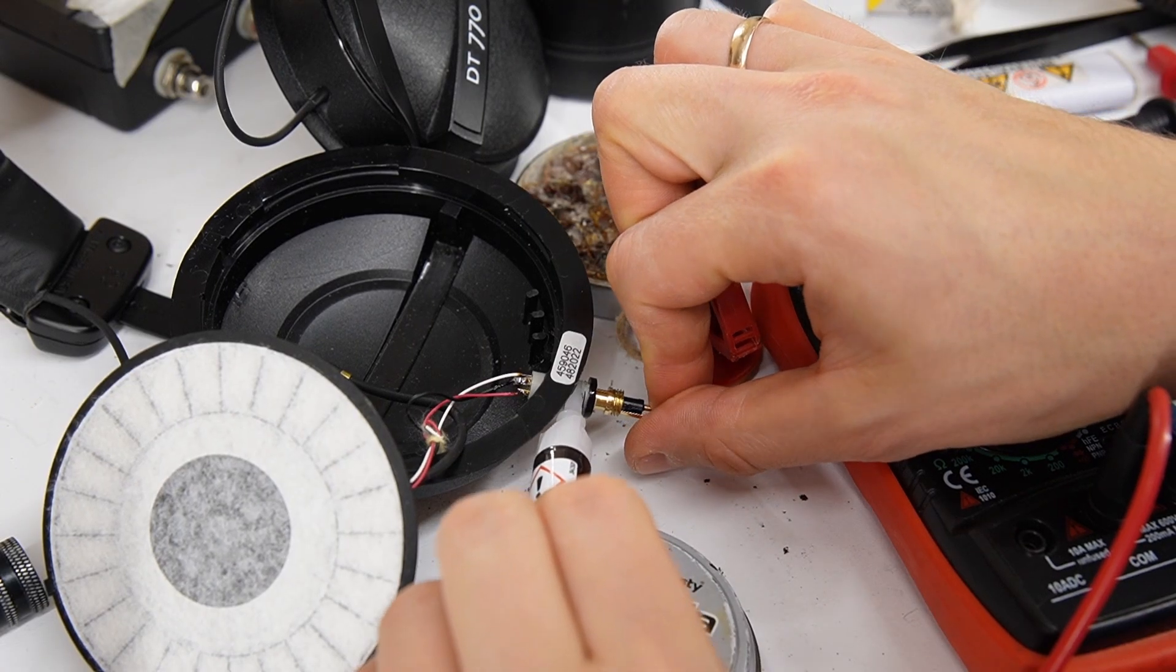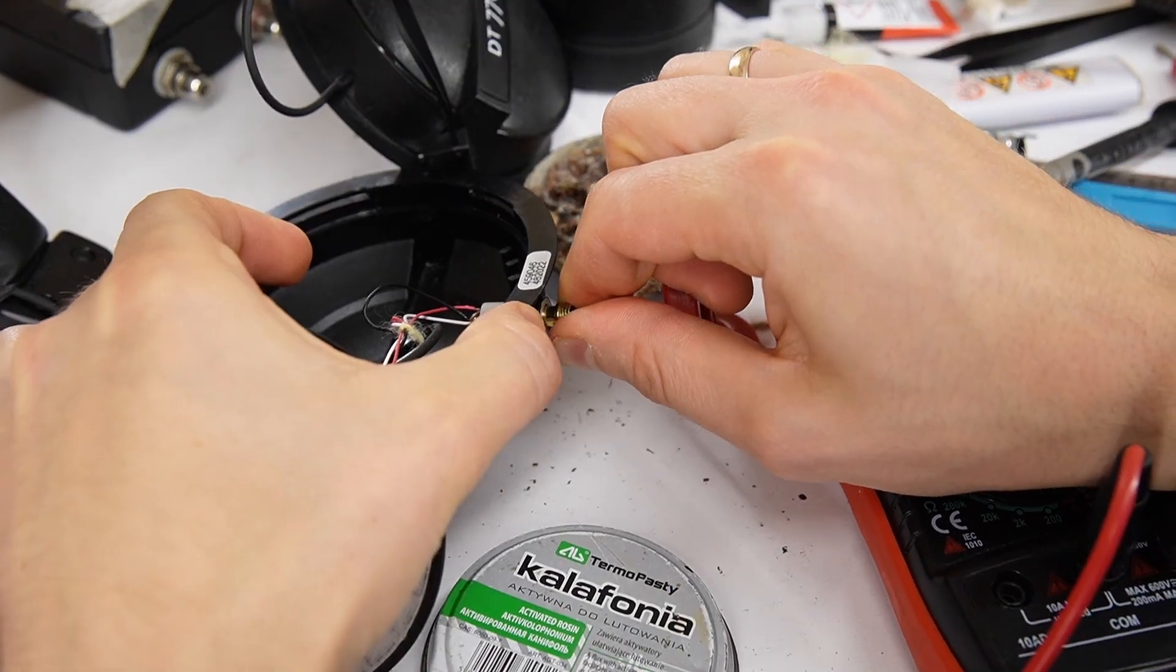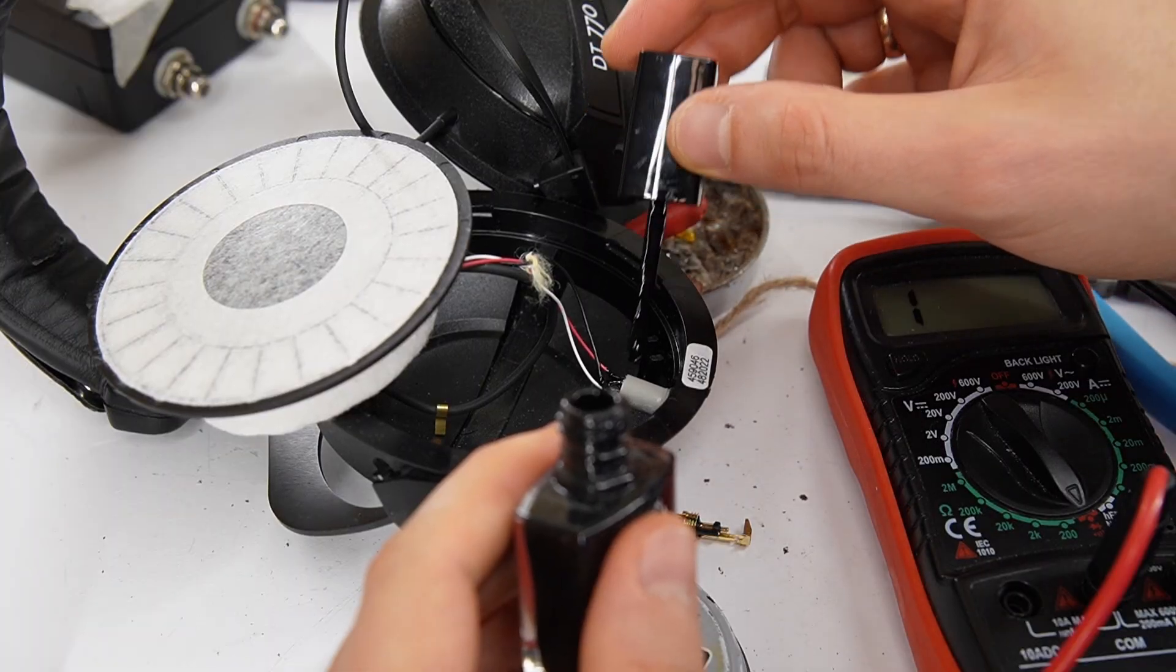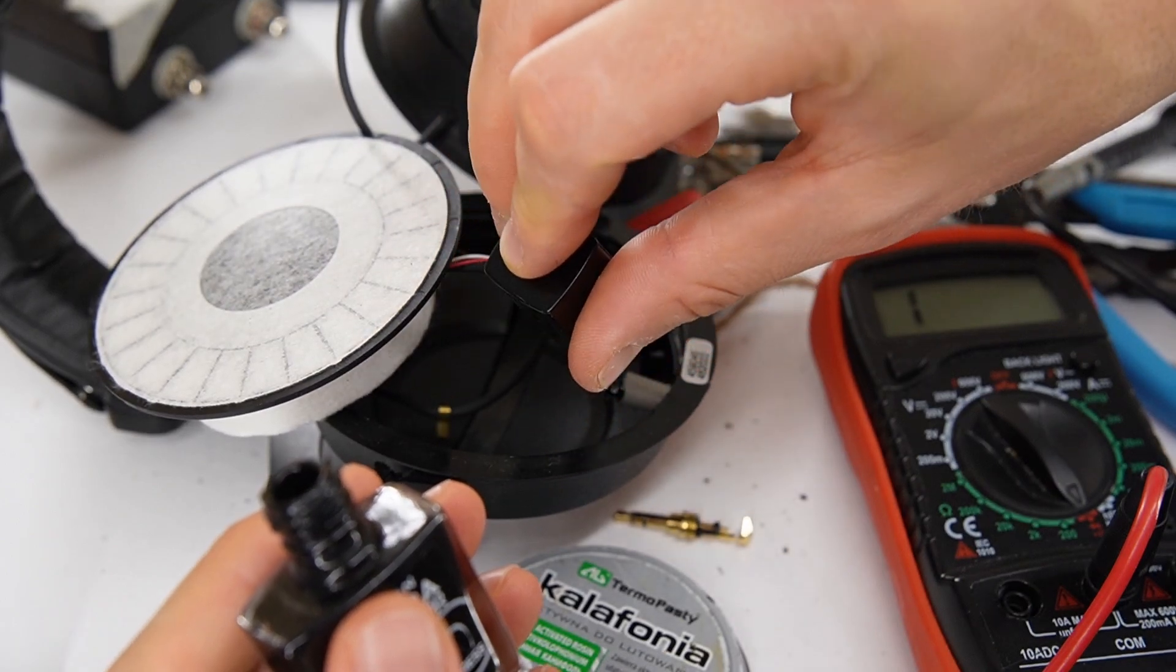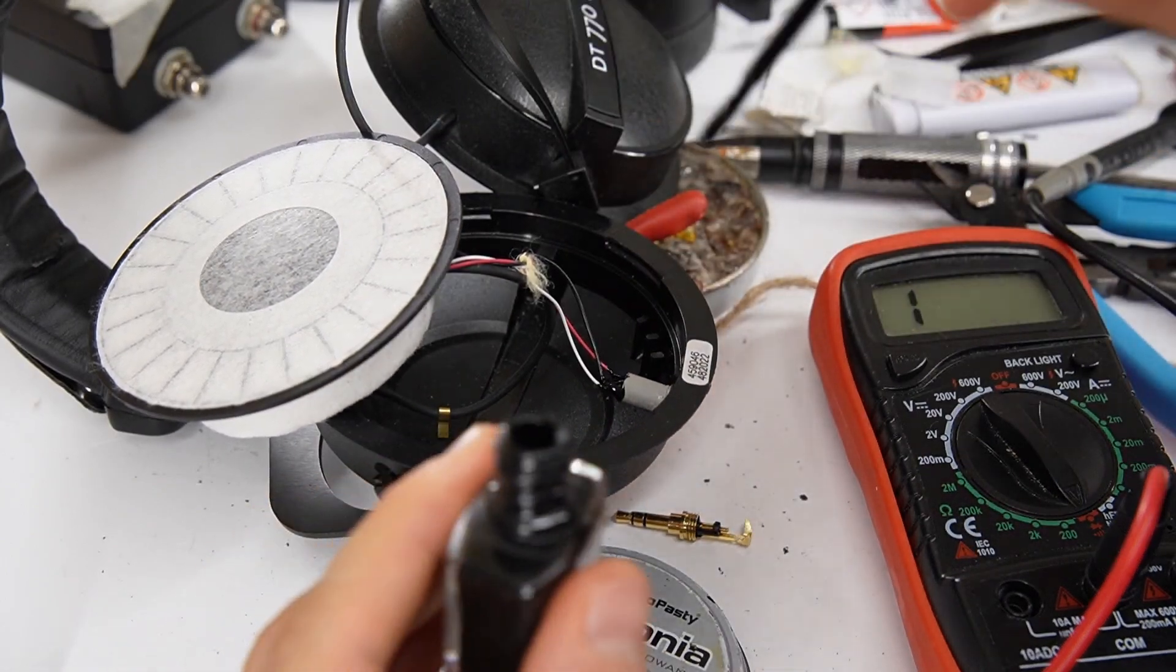Add superglue around the socket mount and push it into the headphone housing. Use nail polish to insulate the socket contacts. This prevents short circuits in the future.